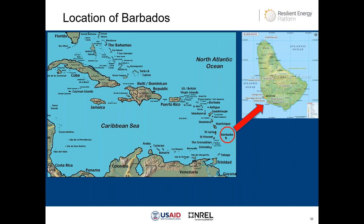Barbados is located in the Caribbean, to the west of the island chain. Barbados is unique in that most Caribbean islands have volcanic or geothermal potential, but Barbados is predominantly coral and rose from the sea, giving it a unique geology on the island.